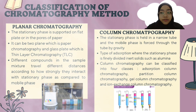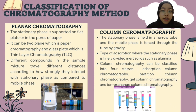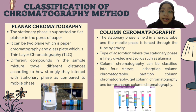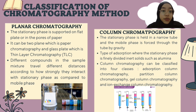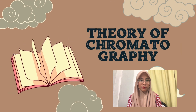The second classification is column chromatography, where the stationary phase is held in a narrow tube and the mobile phase is forced through the tube by gravity. The stationary phase is a finely divided inert solid such as alumina or silica placed in a narrow tube or column. Column chromatography can be classified into four classes: adsorption column chromatography, partition column, gel column, and ion exchange column chromatography.